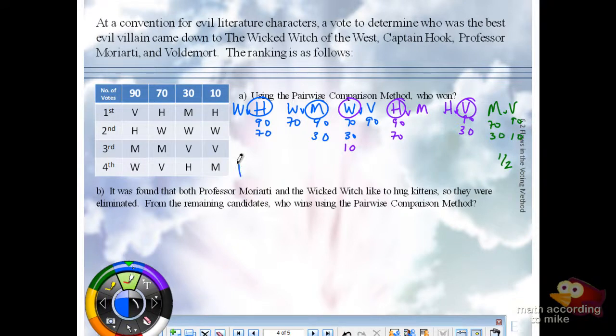Let's add it up. Wicked Witch gets one. Hook gets two. Moriarty gets one and a half. Voldy, one and a half. Who wins? Hook. Hook. Good form. Literature joke there. You're welcome.